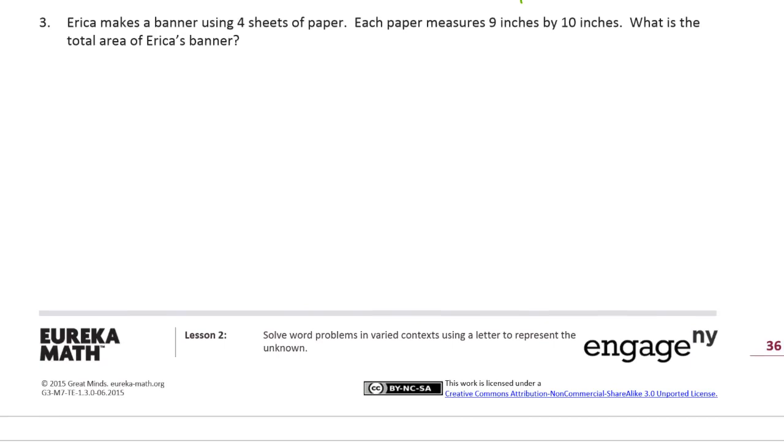Erica makes a banner using 4 sheets of paper. Each paper measures 9 inches by 10 inches. What is the total area of Erica's banner? Okay, so Erica's making a banner, she's got 4 sheets of paper. The total area is, so our unit is a sheet of paper. And each one is 9 by 10. And we need to know the total area. So we could figure out what the area is of each piece of paper. And then multiply that by 4. So, first figure out how much our unit is. And then multiply that by 4. That's the two steps.